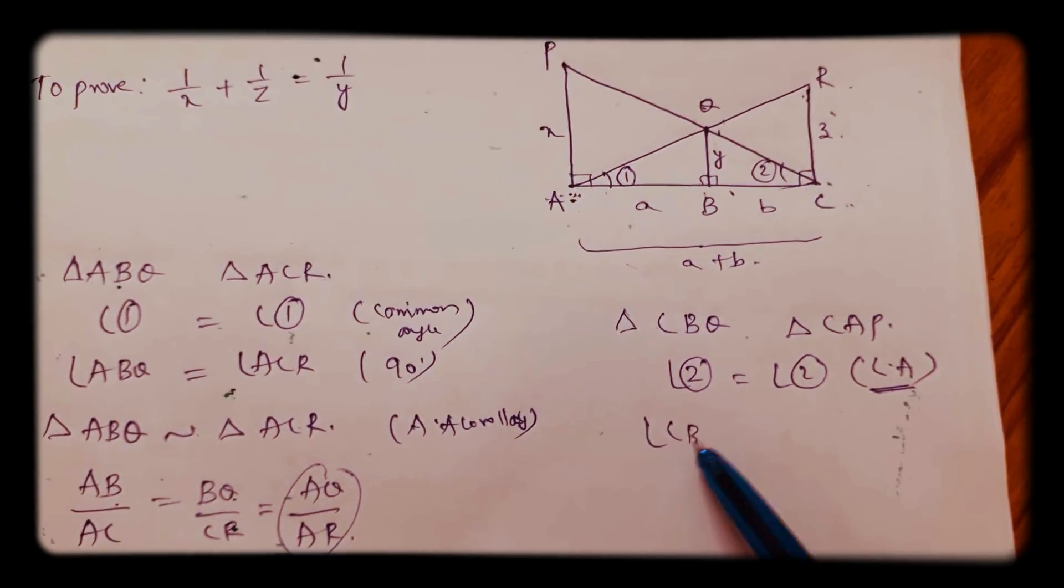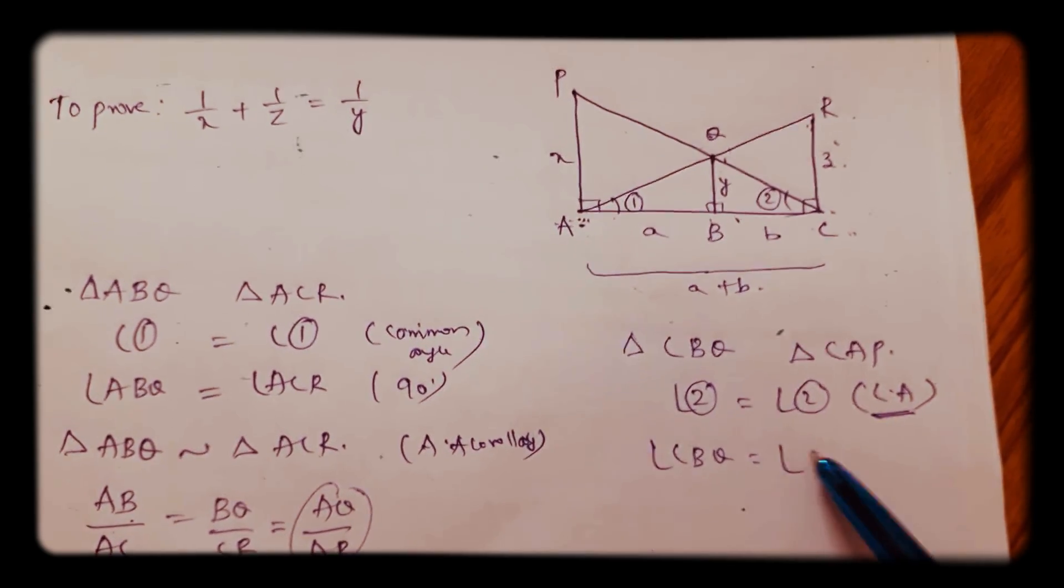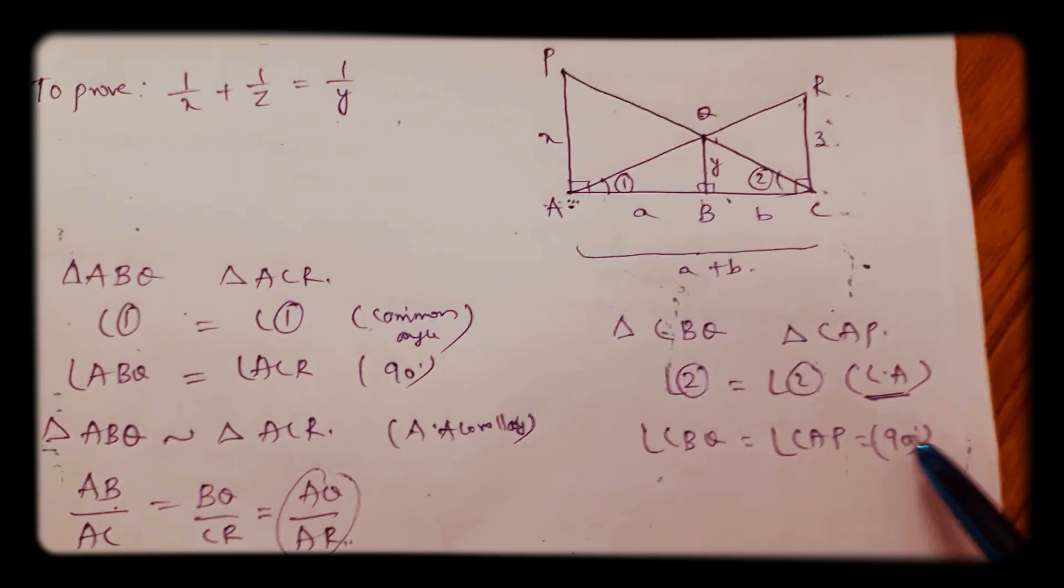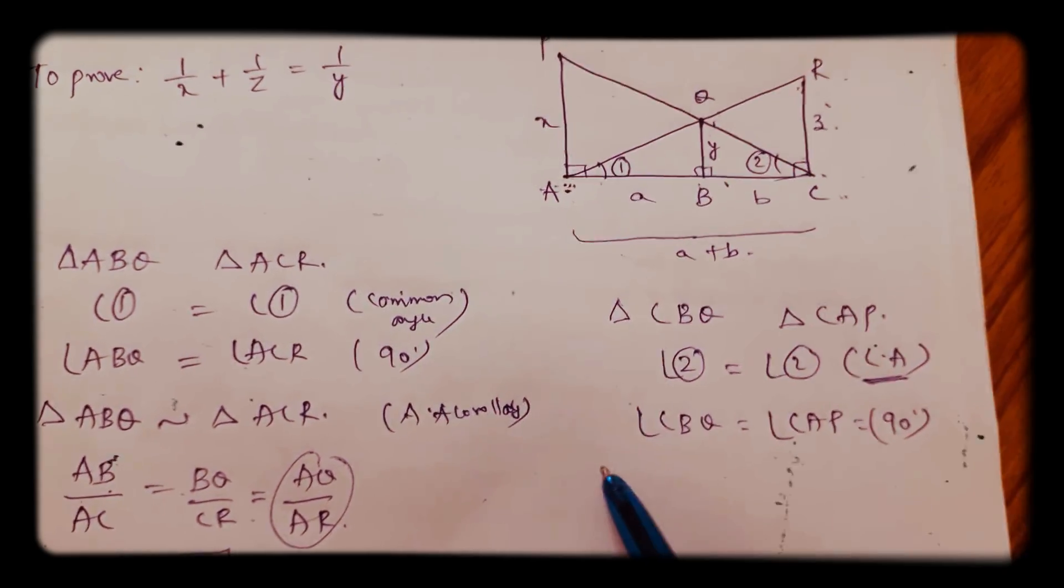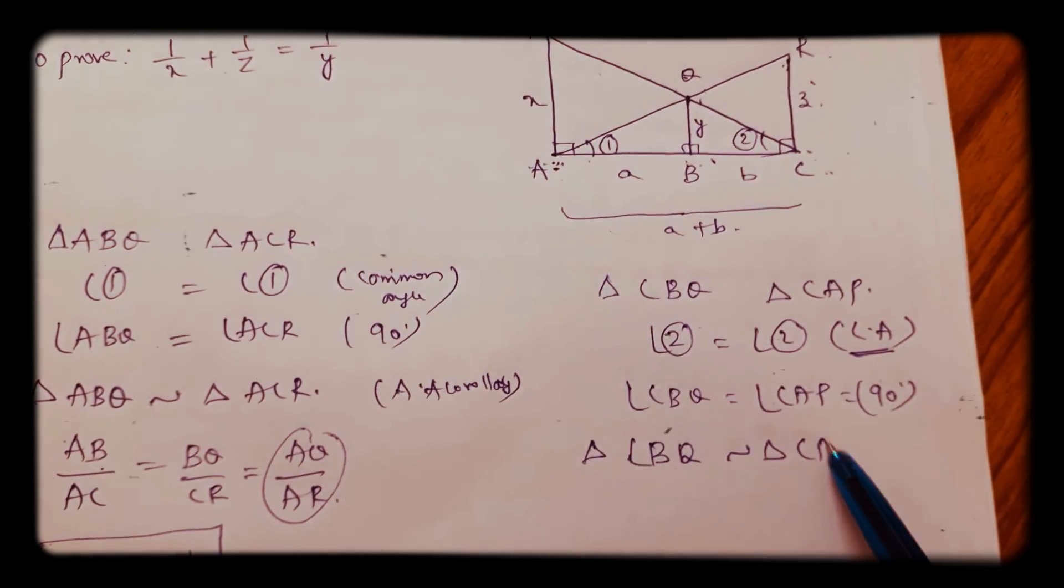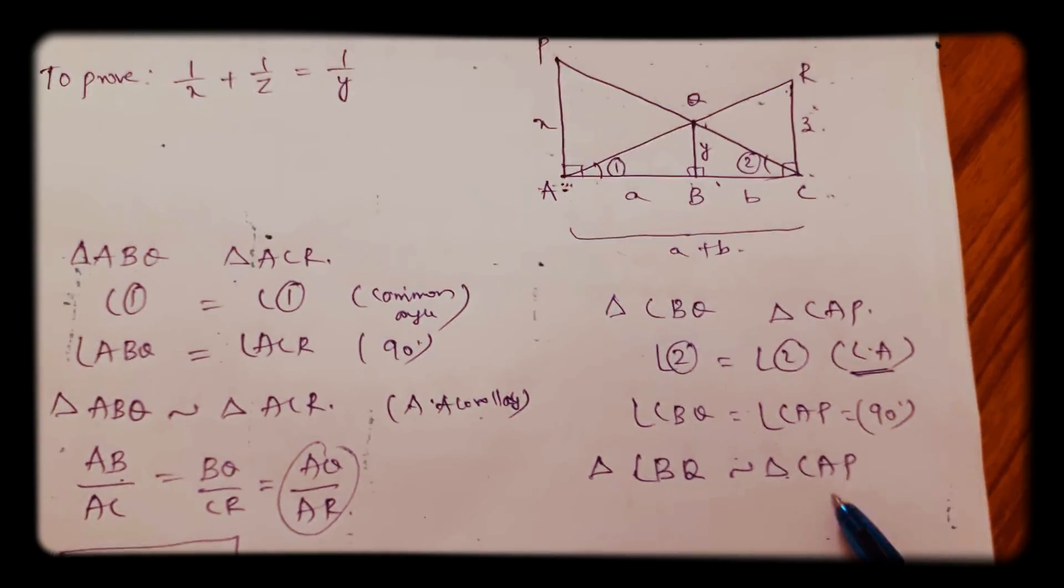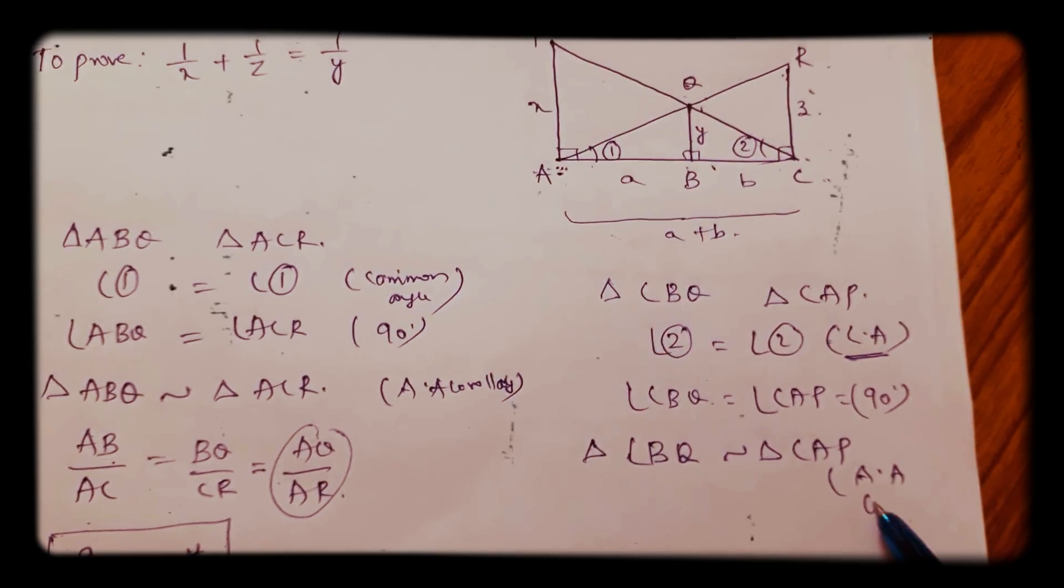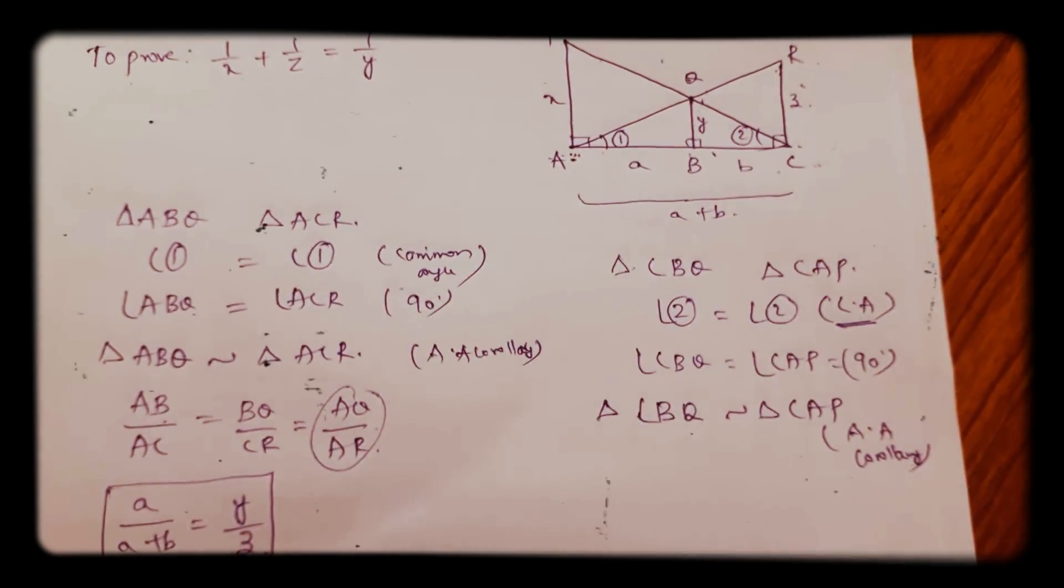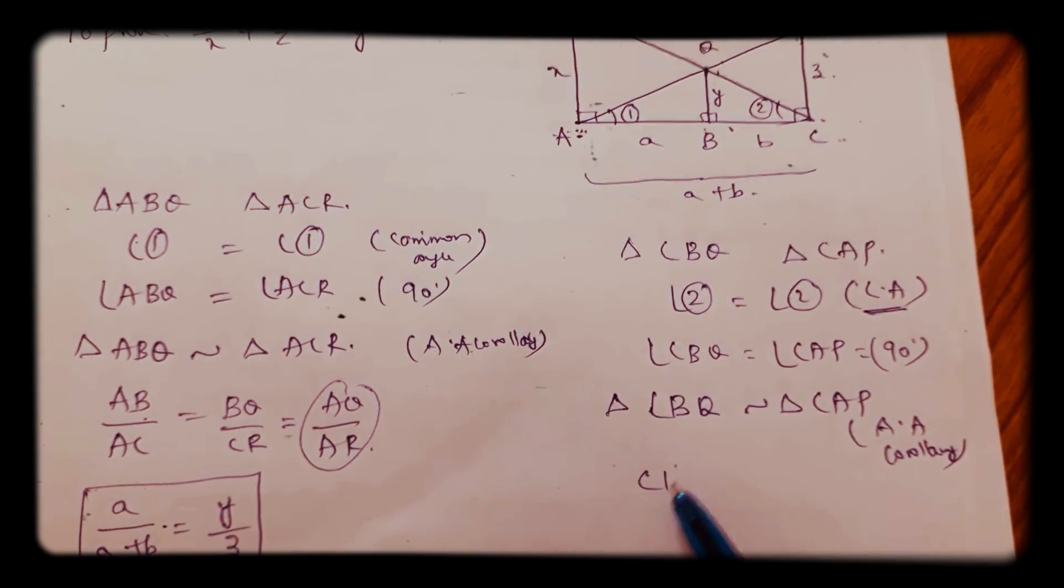Triangle CBQ is similar to triangle CAP by angle-angle corollary. Now if you write sides proportional: CB/CA = BQ/AP = CQ/CP.